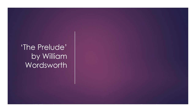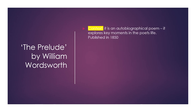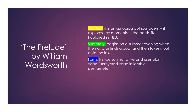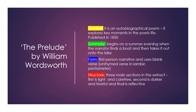The Prelude by William Wordsworth. This is just an extract from The Prelude, which is a very extended poem. It's an autobiographical poem that explores key moments in the poet's life and was published in 1850. It begins on a summer evening when the narrator finds a boat and then takes it out onto the lake. It's in a first person narrative and uses blank verse, which is unrhymed verse in iambic pentameter. The structure has three main sections: the first is light and carefree, the second is dark and fearful, and the final section is rather reflective.